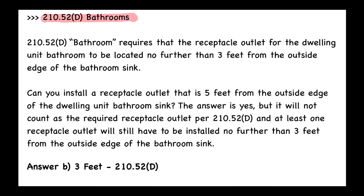Summarizing from the textbook: 210.52(D) requires the receptacle outlet in a dwelling unit bathroom to be no further than three feet from the outside edge of the bathroom sink. You can install a receptacle outlet beyond five feet, but it won't count as the required outlet — at least one must still be within three feet. The answer is B, three feet, per 210.52(D).